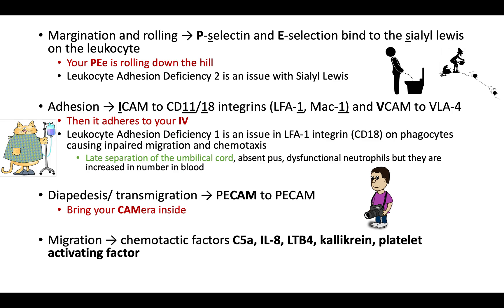LAD type 1 causes impaired migration and chemotaxis as well. So you can think of it this way: if you have a problem with rolling, you can't do adhesion, transmigration, or anything downstream. If you have a problem with adhesion, you can't do anything downstream either — so transmigration and migration are all blocked.